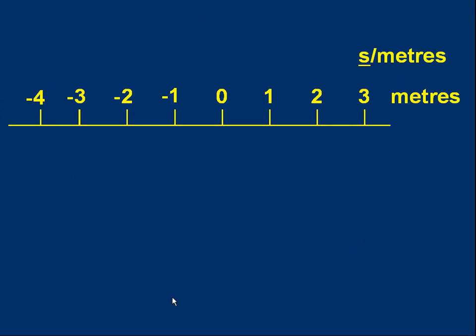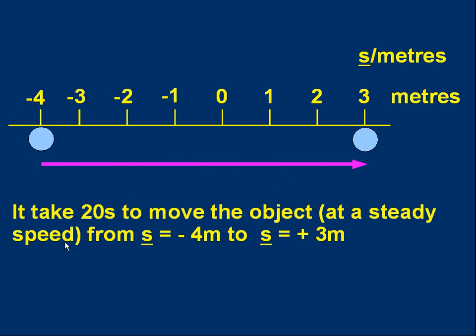Now let's think about an actual situation of moving an object. Here's an axis. I've marked it with a scale in meters. I'm going to put an object at minus 4 meters. That's its displacement with respect to the origin. It's a minus 4 meters. I'm going to displace it. I'm going to move it to 3 meters. So it's got a displacement shown by this purple arrow. Let's suppose it takes 20 seconds to move the object at a steady speed from s is minus 4, that's a left position, to s is plus 3, that's a right position. It takes 20 seconds to do that, moving it at a steady speed.